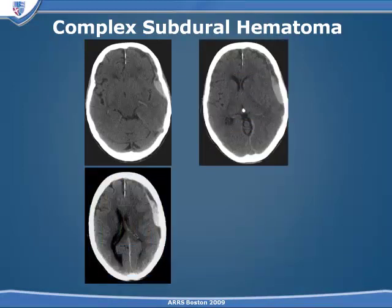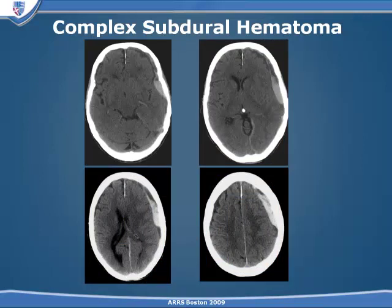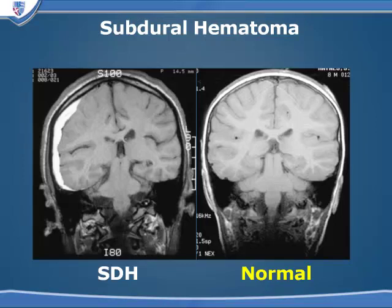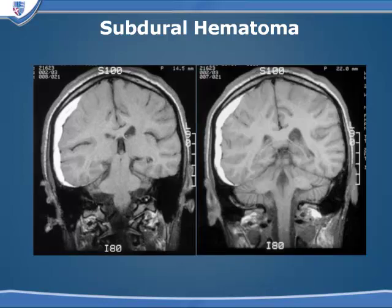We can have very complex subdural hematomas with a heterogeneous appearance — a mixture of high attenuation and low attenuation lesions. We can also have repetitive bleeding into the subdural space, either as a result of continued bleeding from the original vessels or bleeding from the neomembranes that form around a subdural hematoma. The subdural hematoma can layer around the hemisphere and can track underneath the temporal lobe. So the subdural hematoma is really in the epiarachnoid space and can follow around the brain anywhere the arachnoid goes.